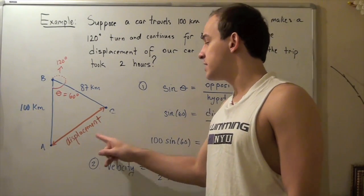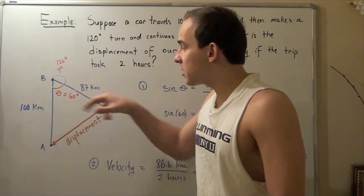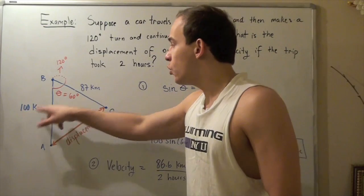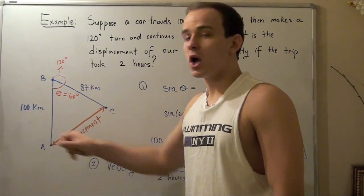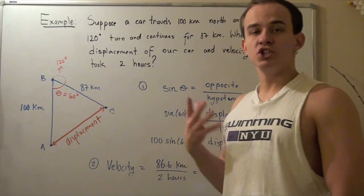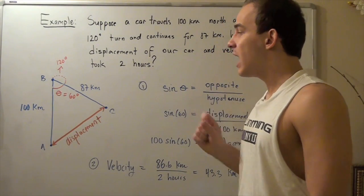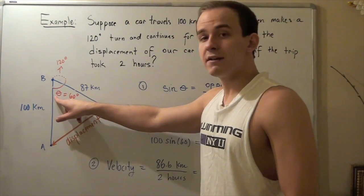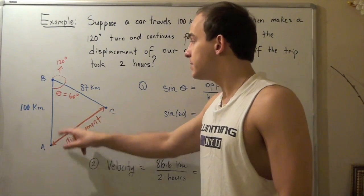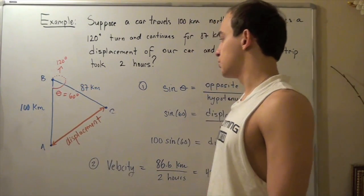How do we find our displacement? We know one of our angles and we know two of our three sides in this triangle. That means we can use a trigonometric function. Let's use sine because sine gives us sine of this angle equals displacement divided by our hypotenuse.